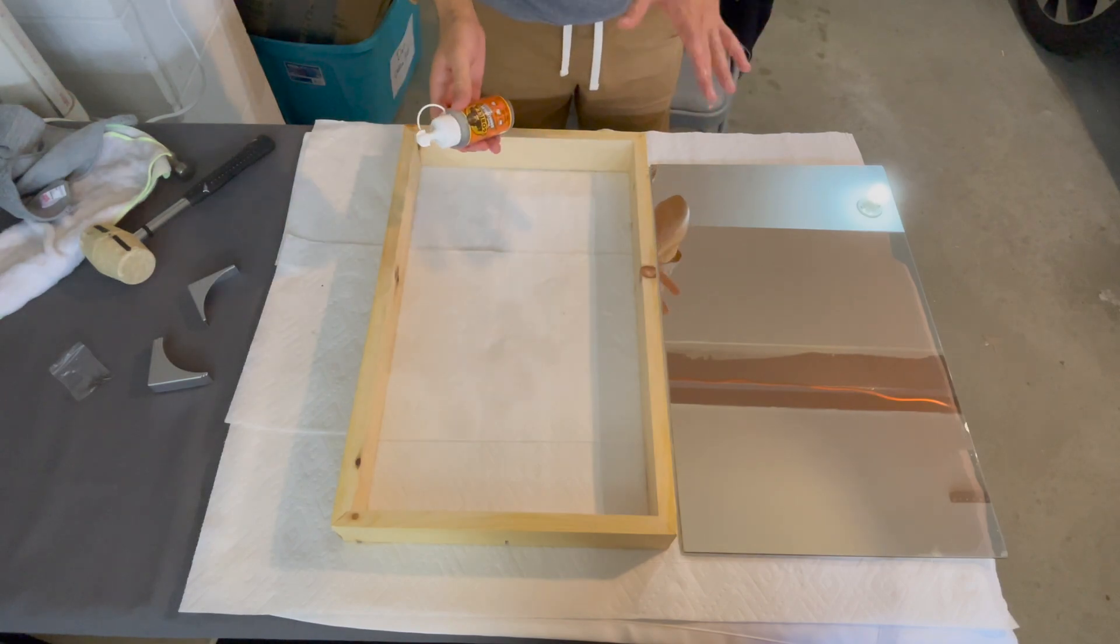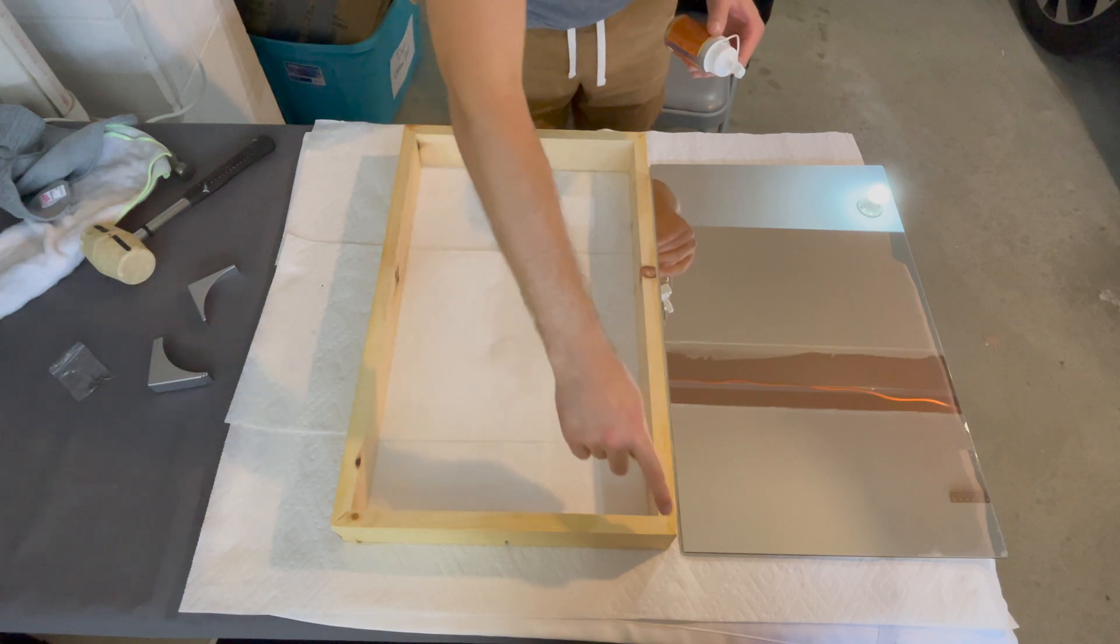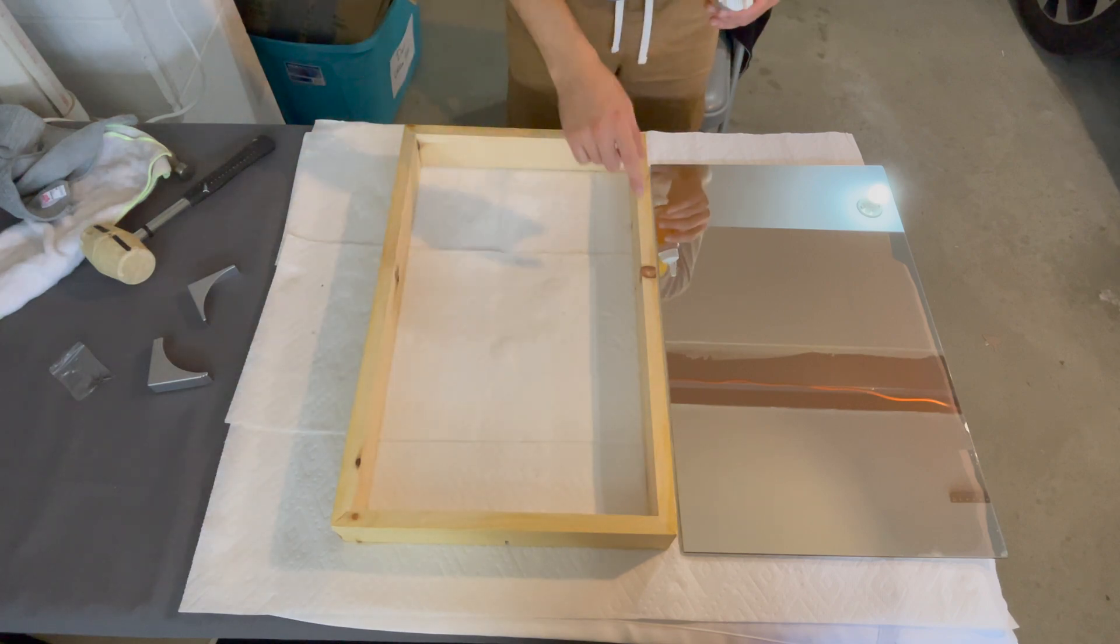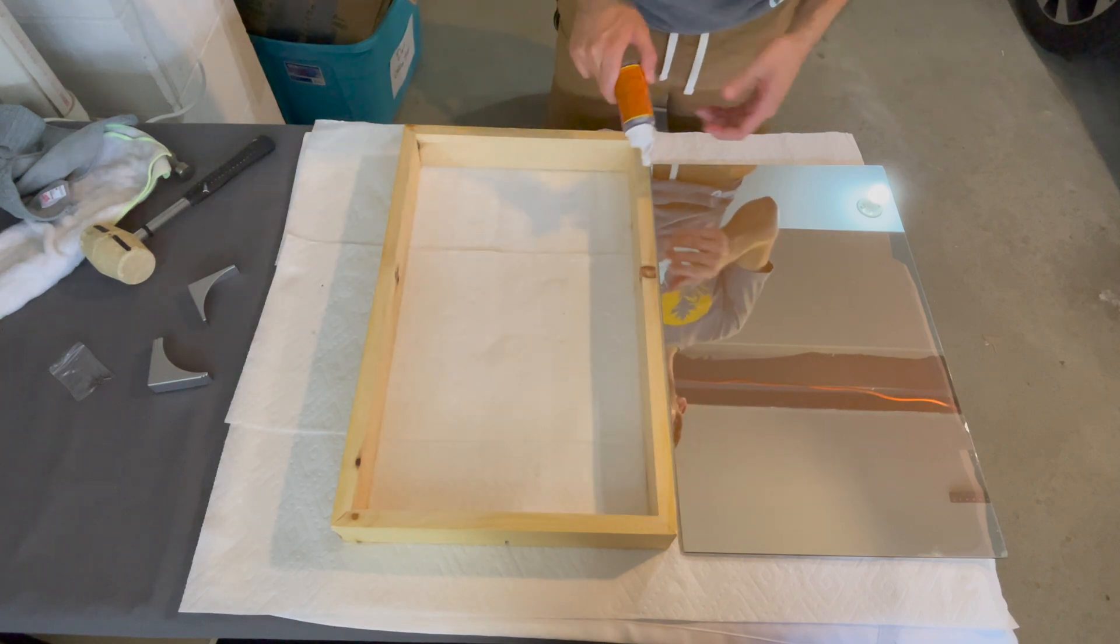We are going to be applying the glue in certain areas on the frame. So, we're going to do all of the corners and then we're going to do a couple spots in between as well. We could do one long strip, but as I mentioned before, too much glue can leak out of the frame and it looks a little bit less professional.